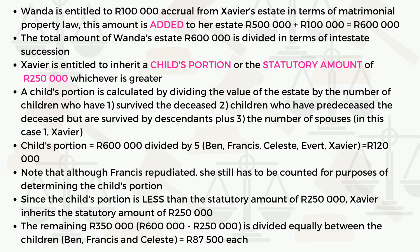Before we get into the calculation, an important point: because these people are married out of community of property, you do NOT divide the estate by two at the start. This is a mistake many people make, and it will result in getting zero for the question.